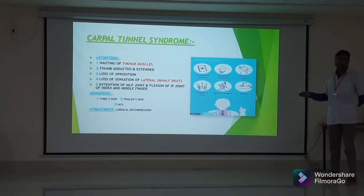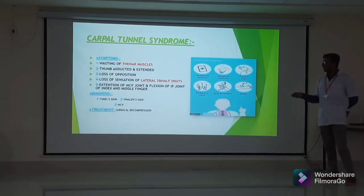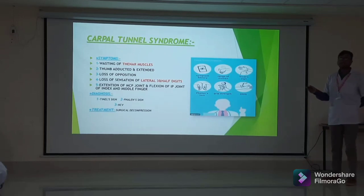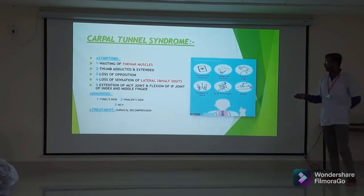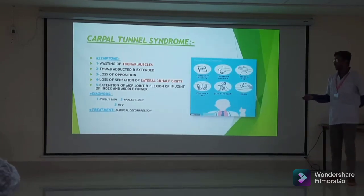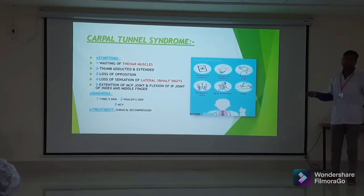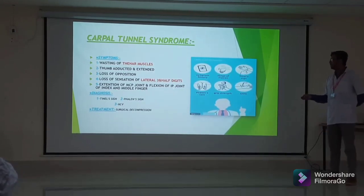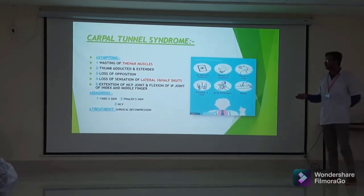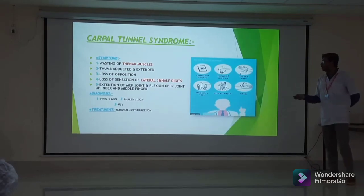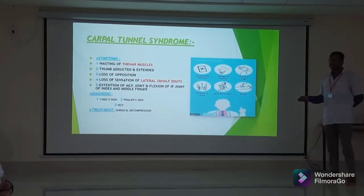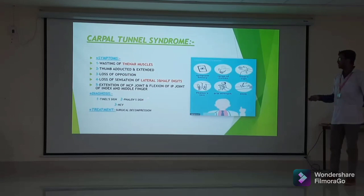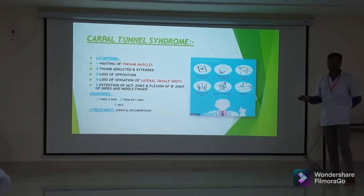Symptoms include wasting of thenar muscles, thumb becoming adducted and extended, loss of opposition of thumb, loss of sensation over the lateral three and a half digits, extension at the metacarpophalangeal joint, and flexion at the interphalangeal joints of the index and middle fingers. Diagnosis is made with Tinel's sign, Phalen's sign, and nerve conduction velocity test.